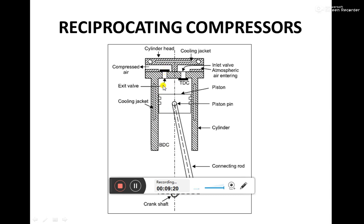The exit valve opens as the piston reaches the top dead center and the compressed air is delivered out to the receiver. Cooling jackets may also be provided on the body of the cylinder to manage the heat generated by friction between the piston and the cylinder, similar to cooling arrangements in IC engines.